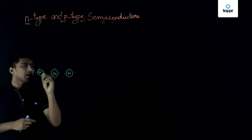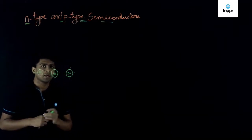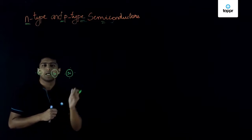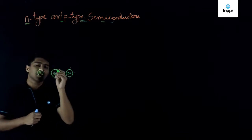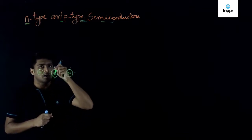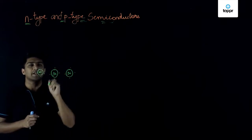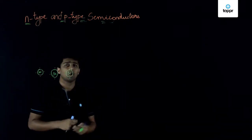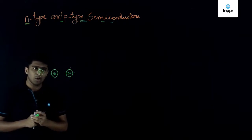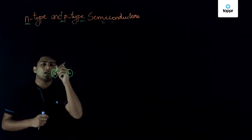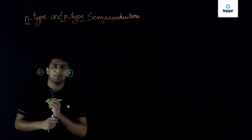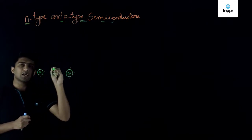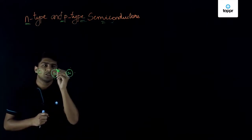it will have many silicon atoms. In order to improve the efficiency of a semiconductor, what we do is we add doping. We can add either a donor impurity or an acceptor impurity. Now, let's say we are adding a pentavalent impurity, which means it will have five electrons in its outermost shell.